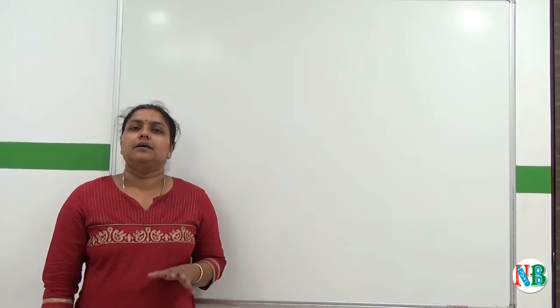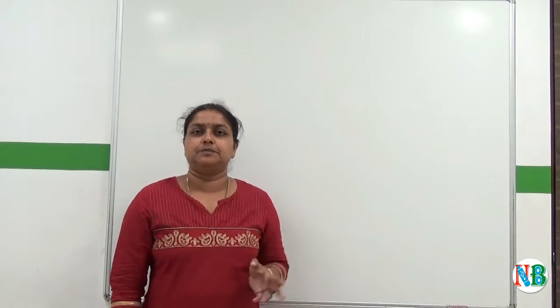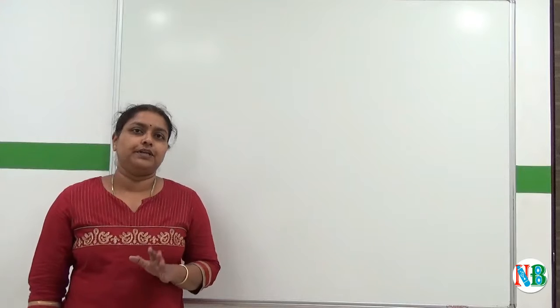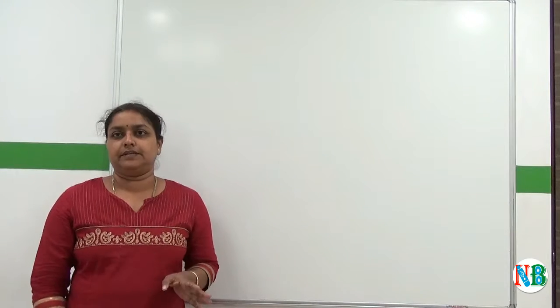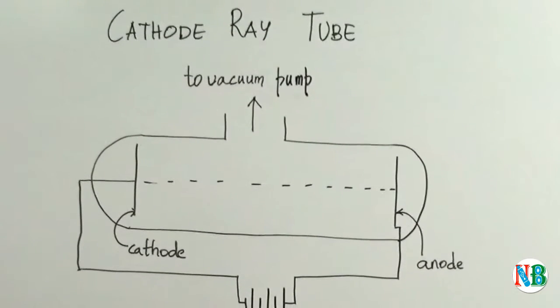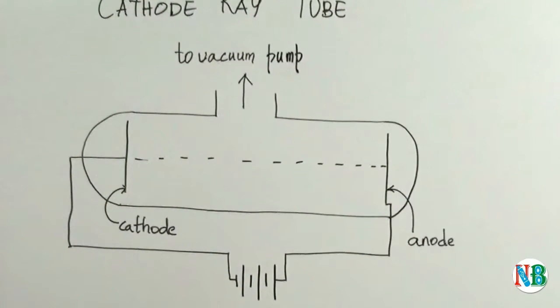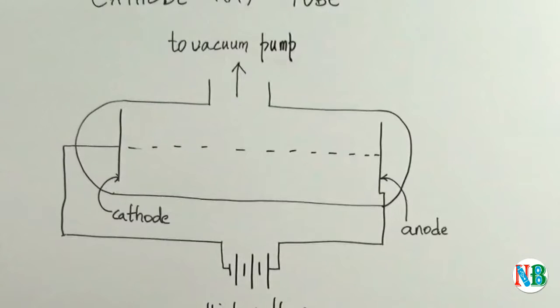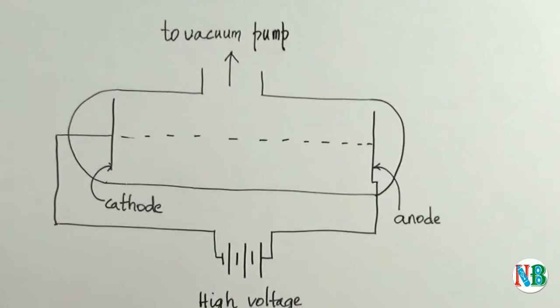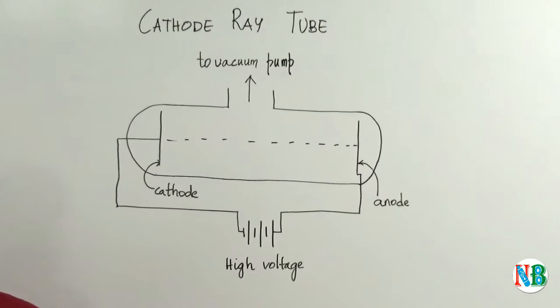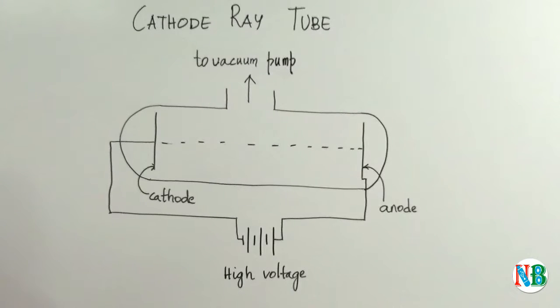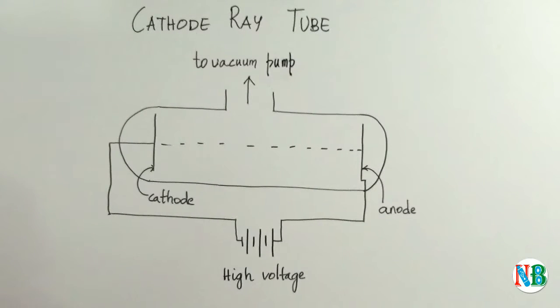In 1830, Michael Faraday conducted an experiment using a cathode ray tube to prove this theory. Michael Faraday surmised that by passing an electric current through an electrolytic solution, electrons would be released. To do this, he used a cathode ray tube.